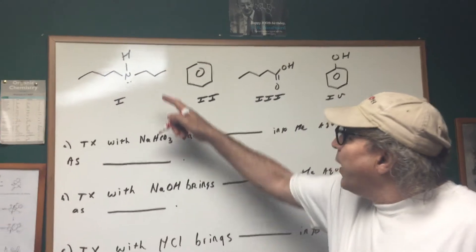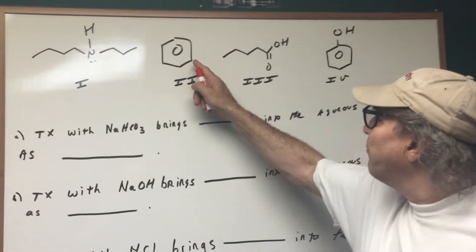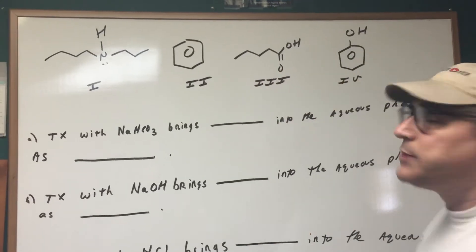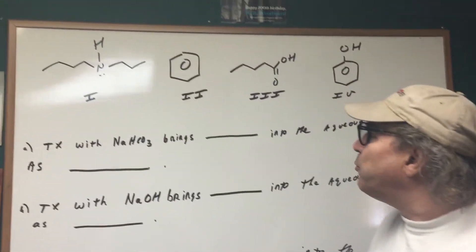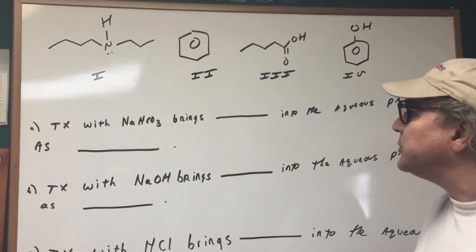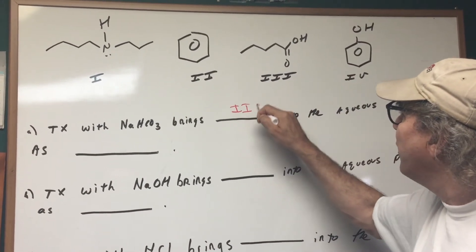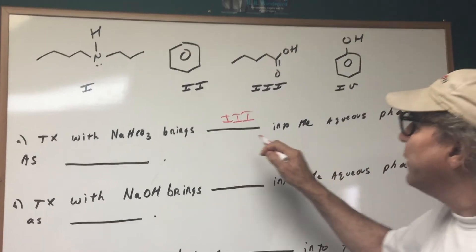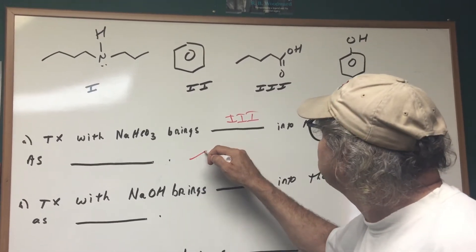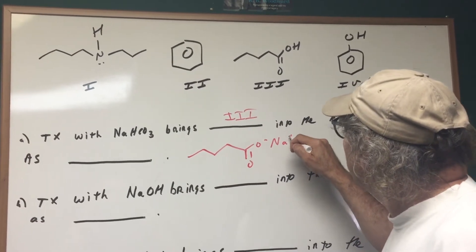Let's go to the board and try one final question to see how well you understood this. I'm going to give you four compounds: a secondary amine, benzene, a carboxylic acid, and a phenol. It says that treatment with sodium bicarbonate brings blank into the aqueous phase as blank. The sodium bicarbonate will bring compound number three — the carboxylic acid — into the aqueous phase as the carboxylate salt.